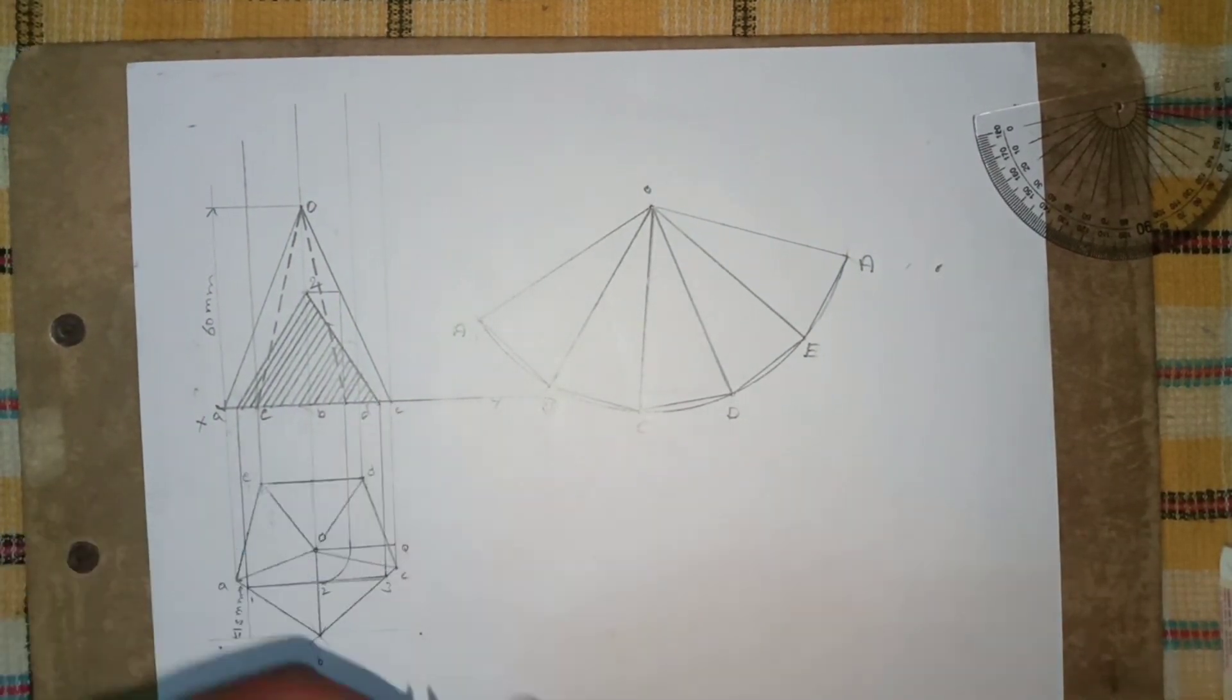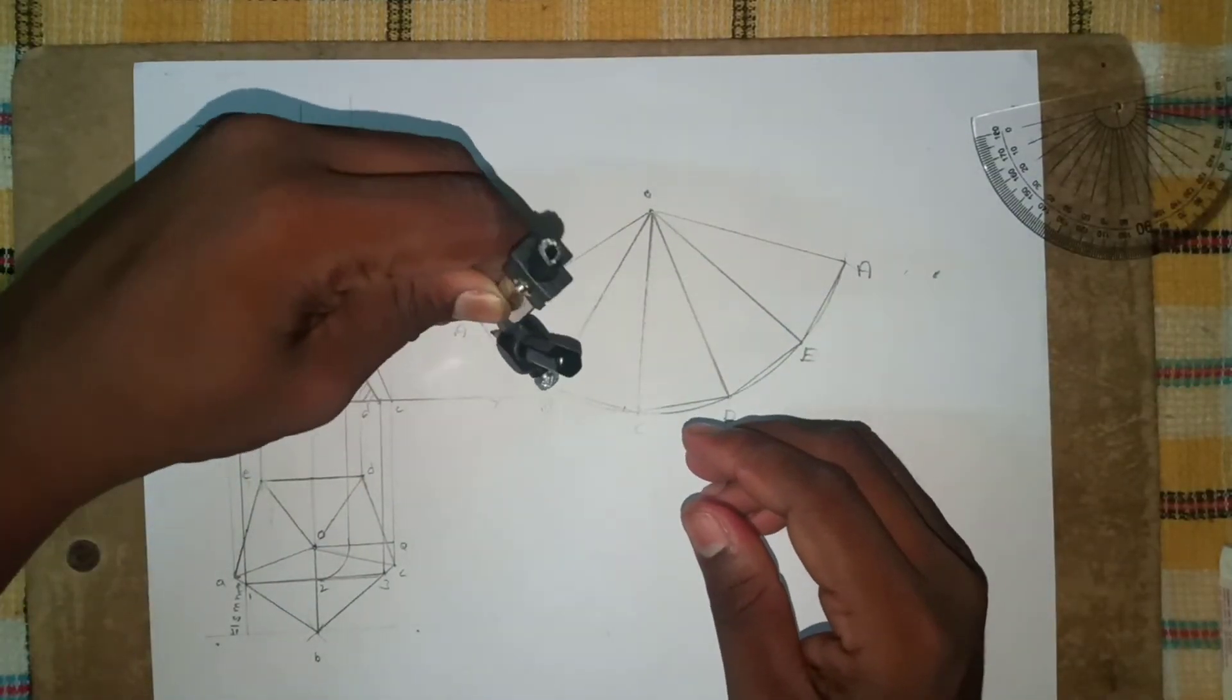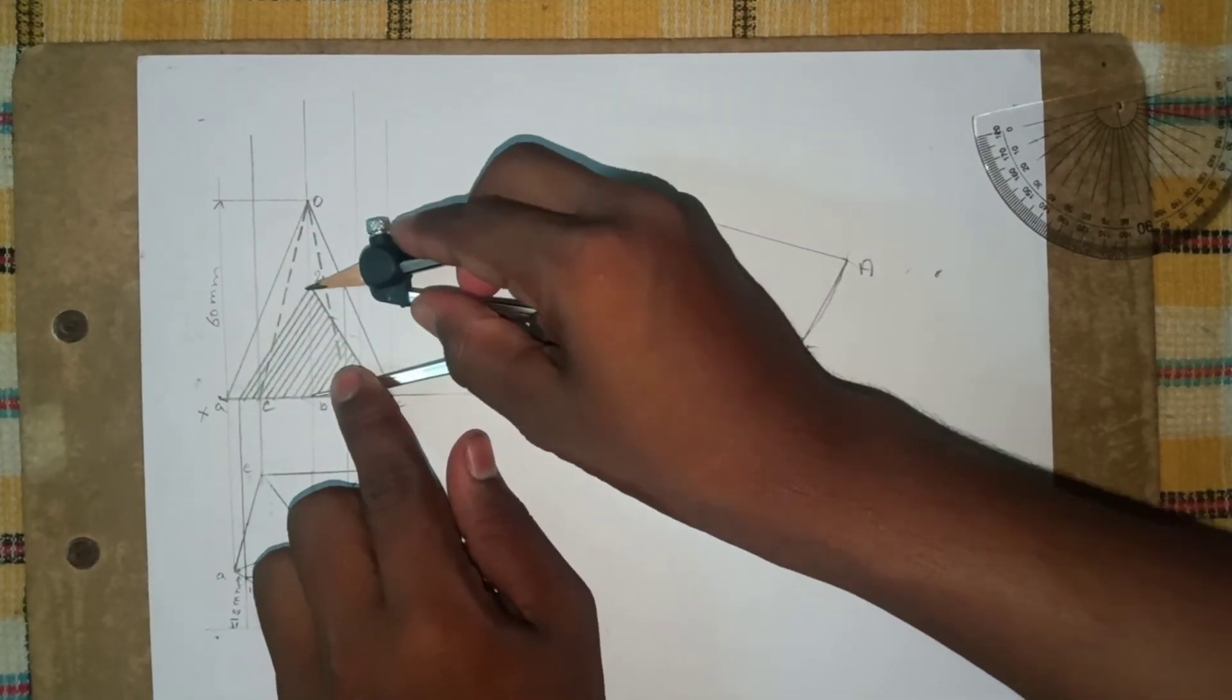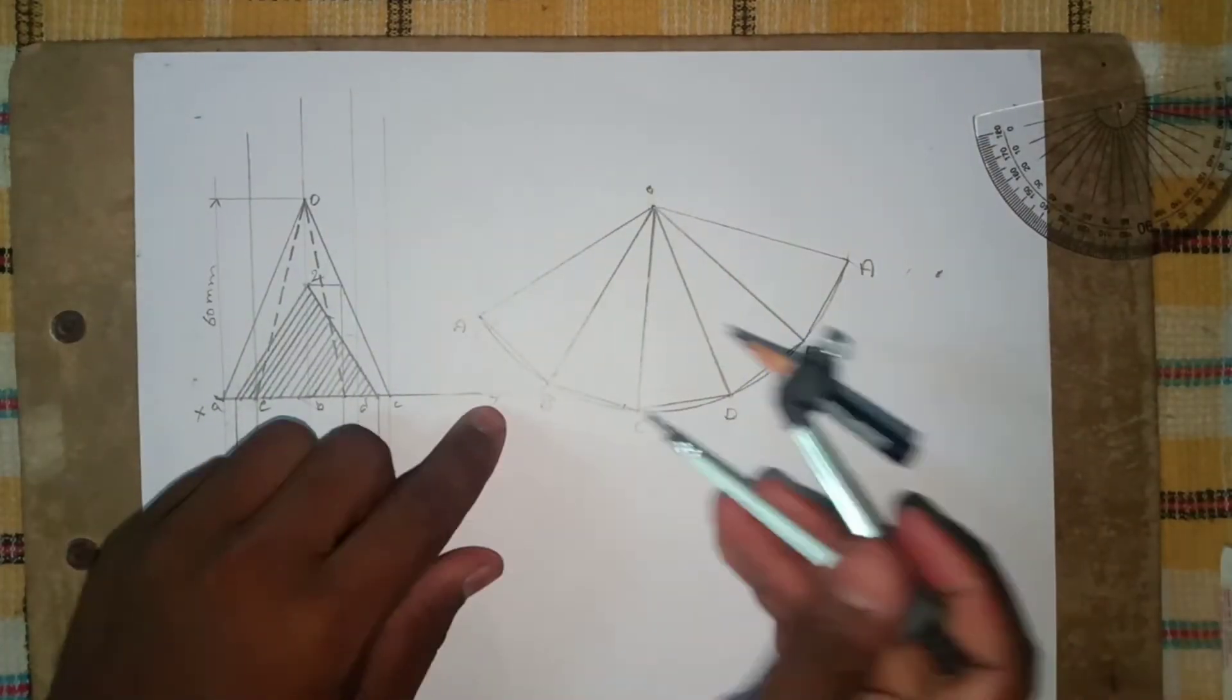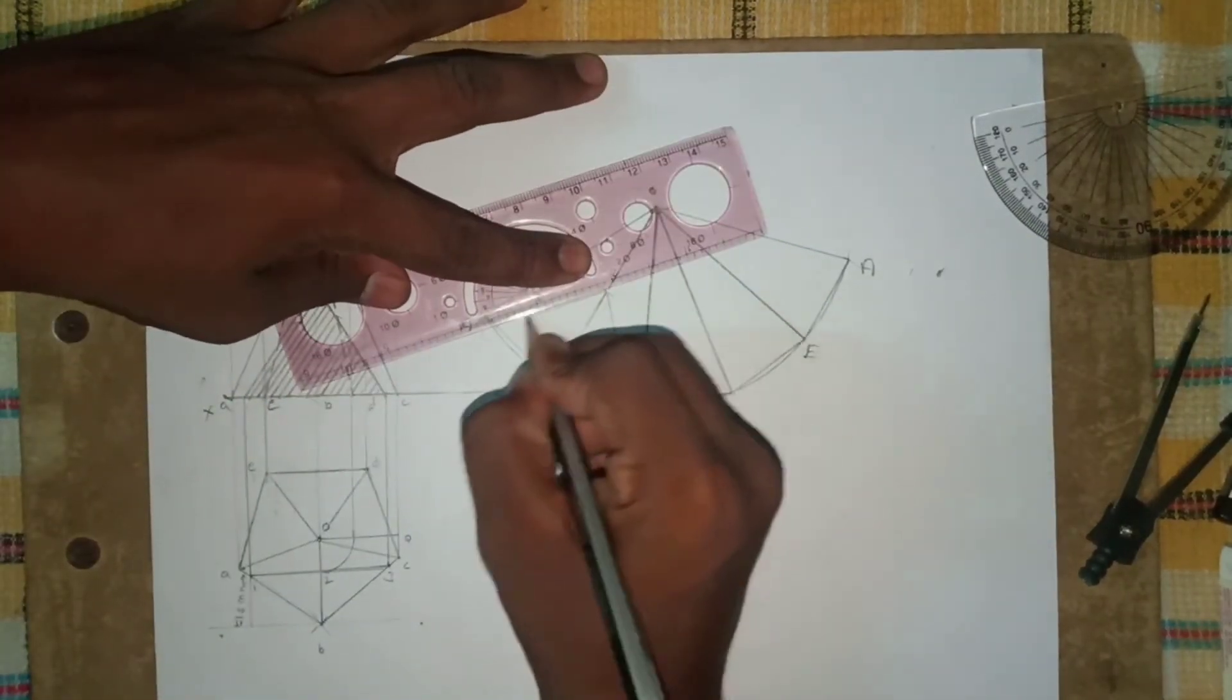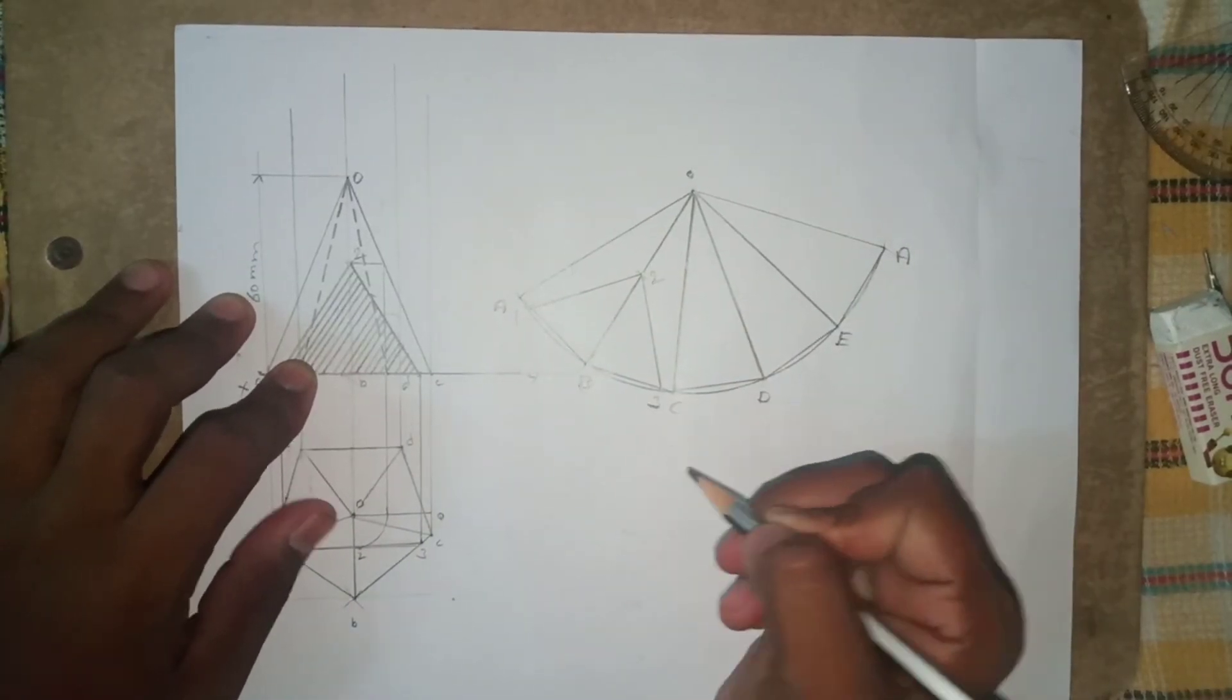Now take the dimensions like this. Notations are important. Take M, B, C, D, E, O to B and draw an arc. Join the points. Now it was completed. Thank you.